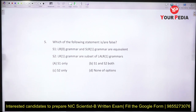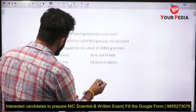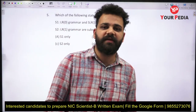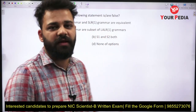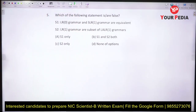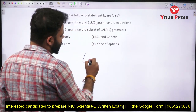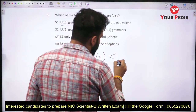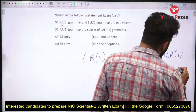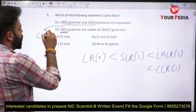The next question asks which of the following statements are false, and it is from compiler design. Statement 1: LR0 grammar and SLR1 grammar are equivalent. In NIC they won't ask questions in great depth on parsers — they focus on theoretical concepts. The parsing power hierarchy is: LR0 is least powerful, then SLR1, then LALR1, and the most powerful is CLR1 (also called LR1 parser).